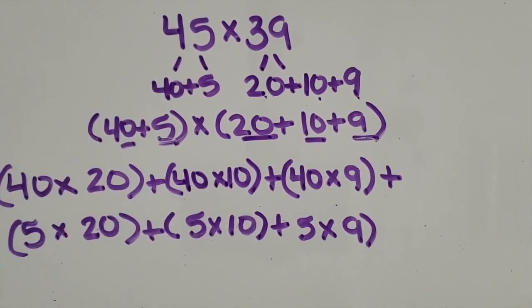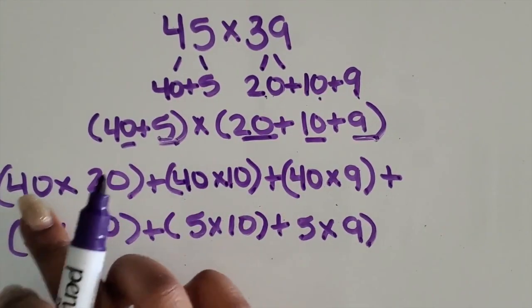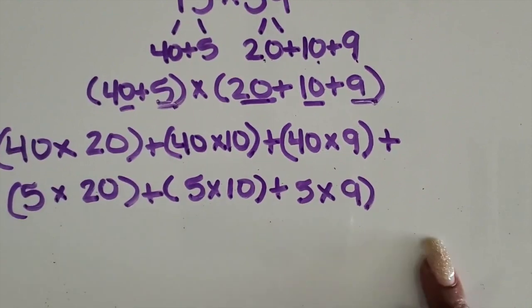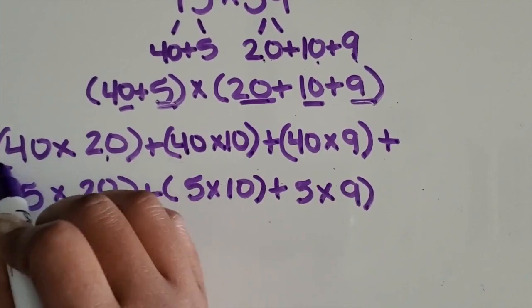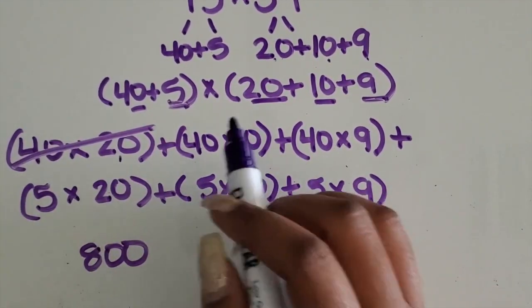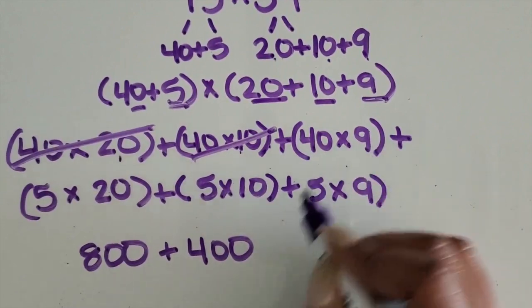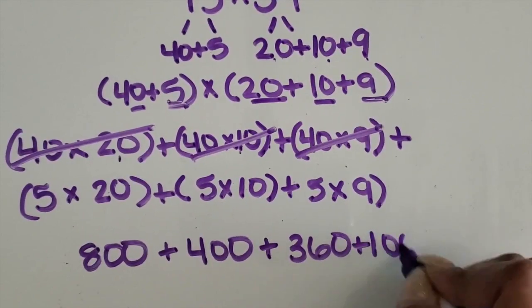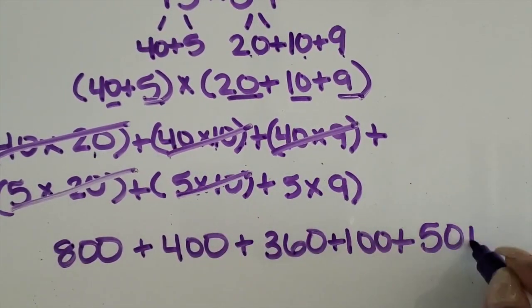I'm going to write the values of each product from each expression down below. 40 times 20 is 800 — I'll cross it out to mark it done. 40 times 10 is 400. 40 times 9 is 360. 5 times 20 is 100. 5 times 10 is 50. And 5 times 9 is 45.